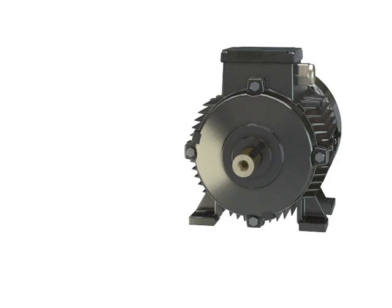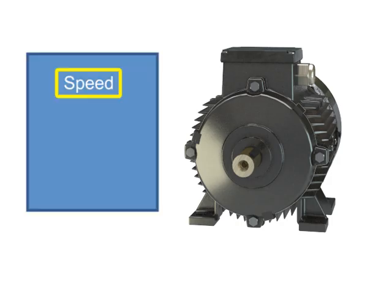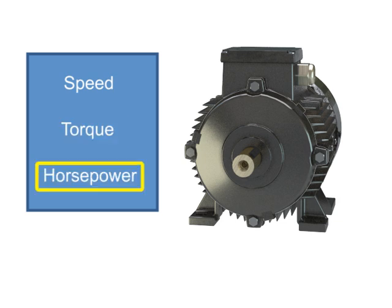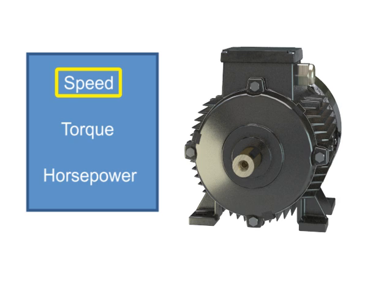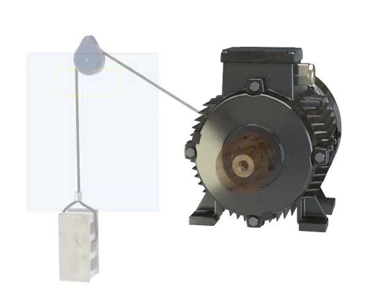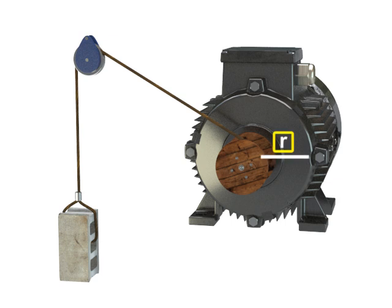The three factors that determine the type of work a motor can produce are speed, torque, and horsepower. Speed is defined as how fast the motor performs its work. For example, a shaft can rotate slowly or quickly. The typical units of measurement for rotational motor speed are revolutions per minute, or RPM.